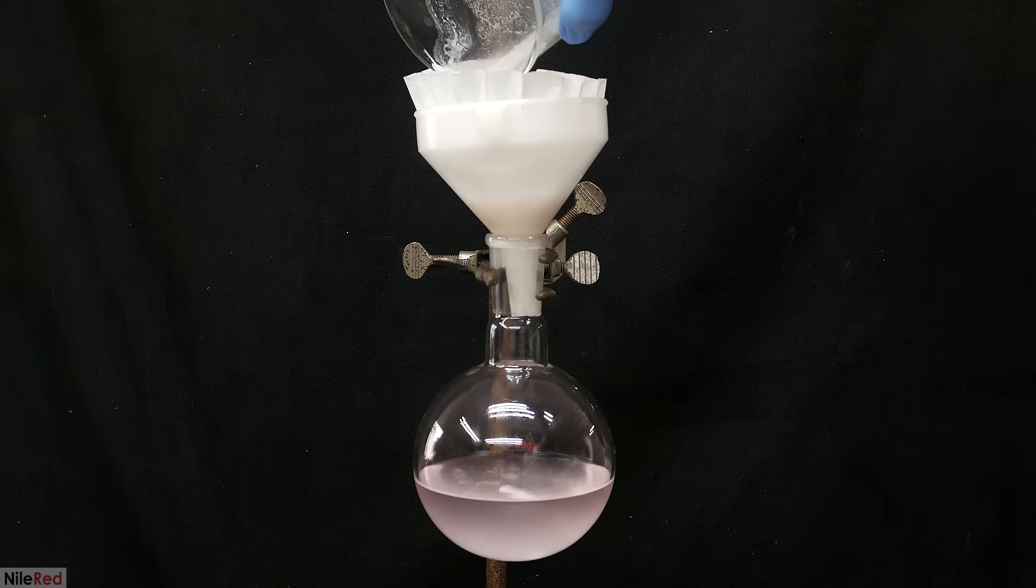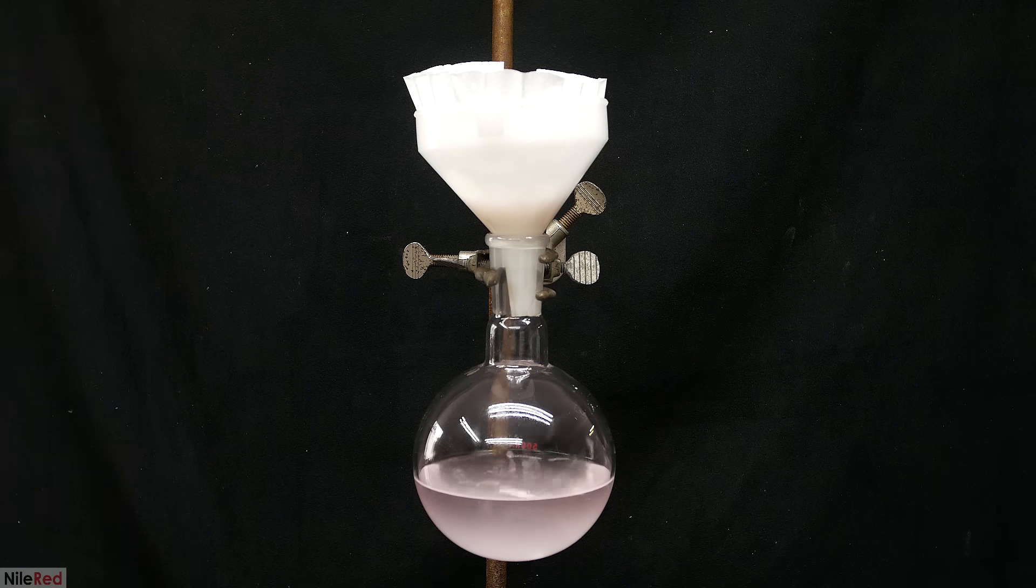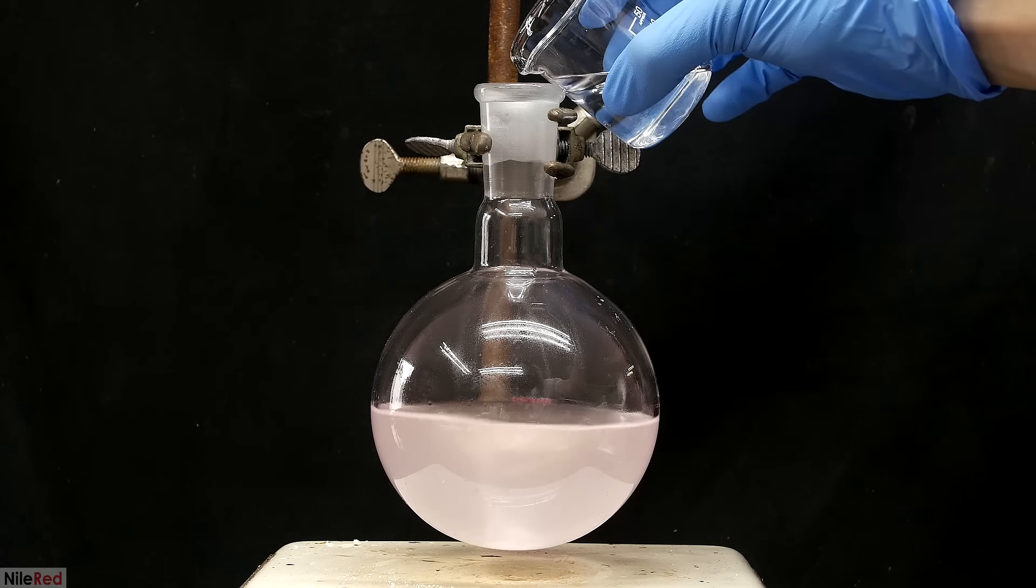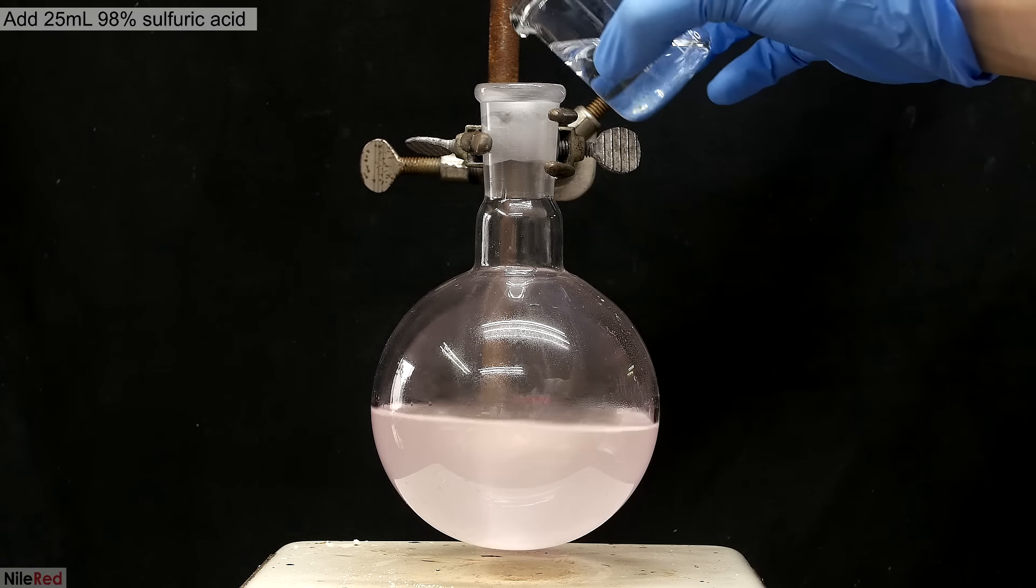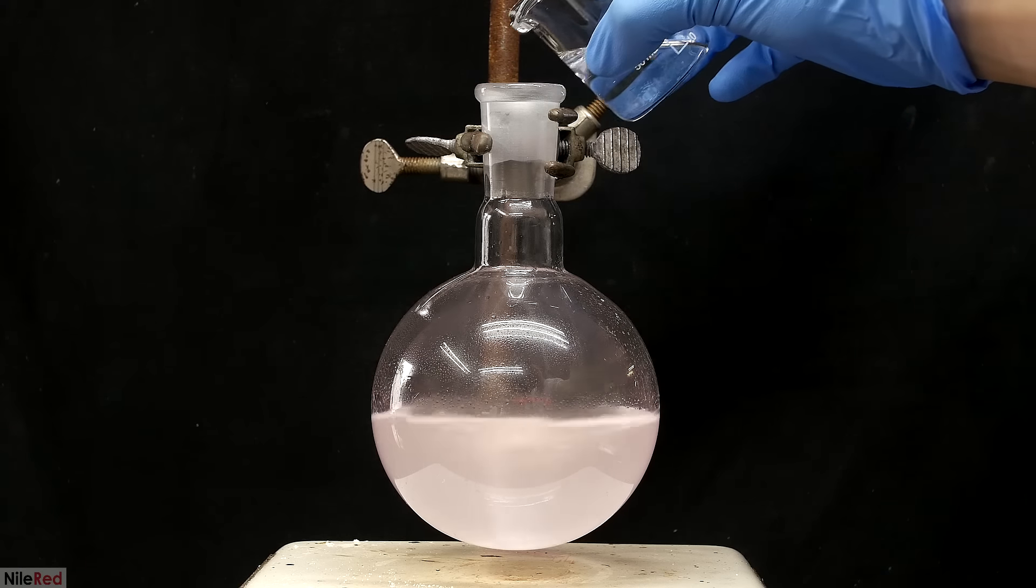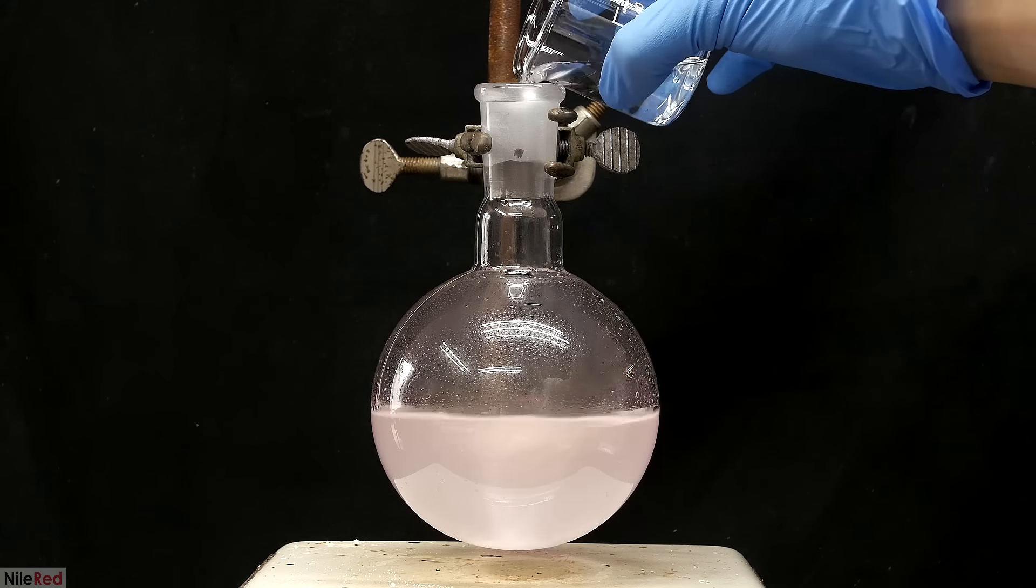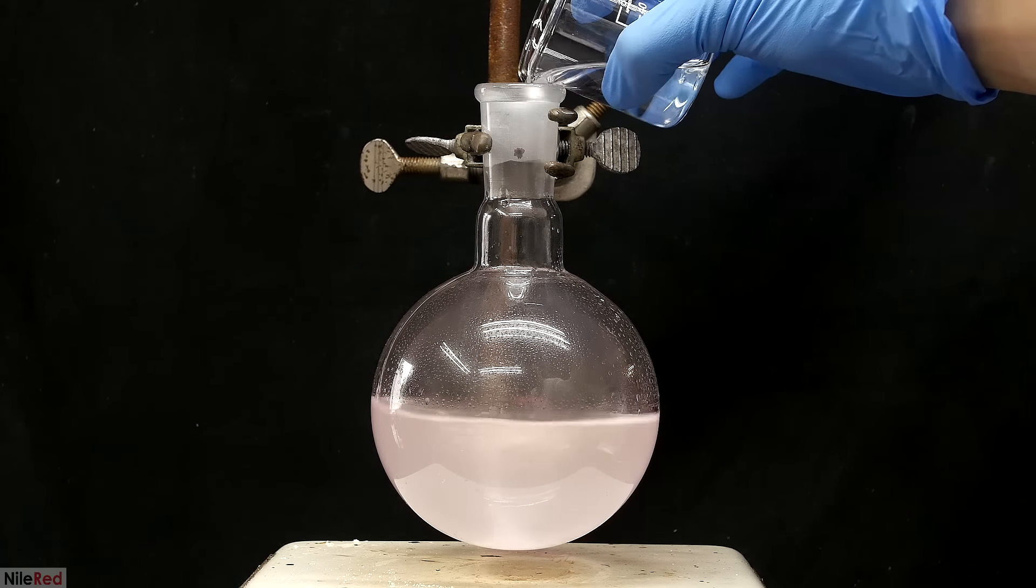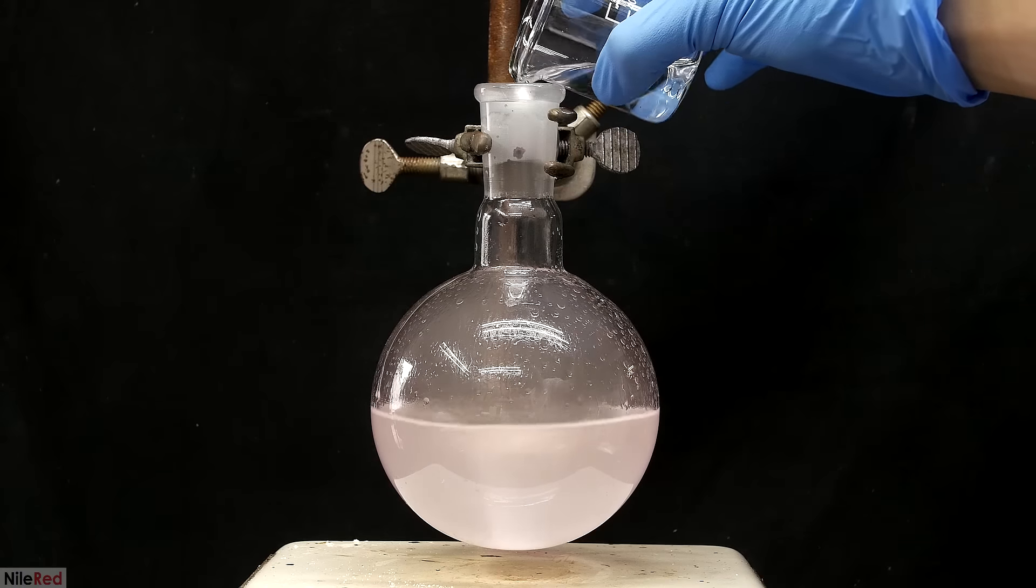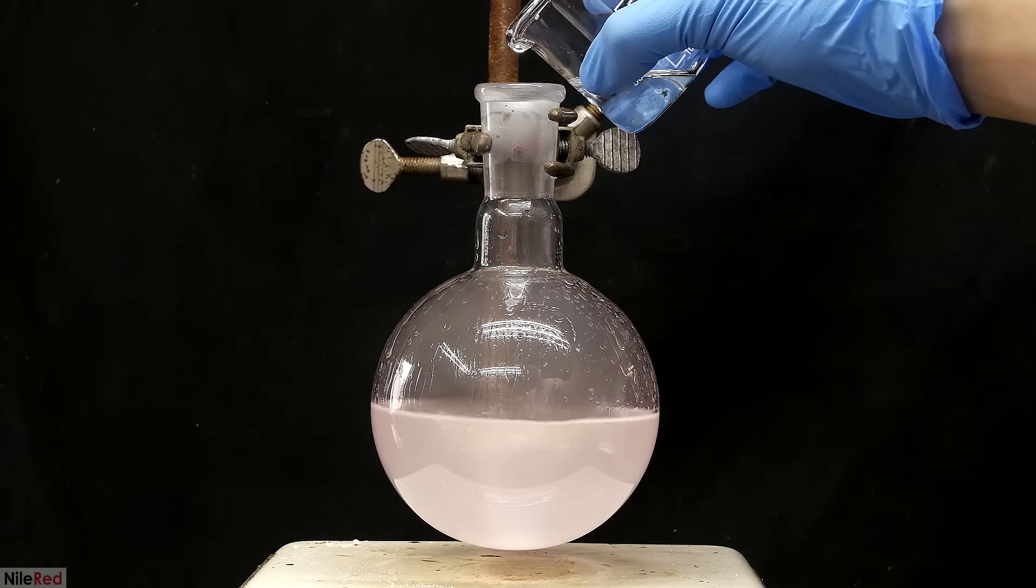After everything passes through, the beaker and the filter are both washed with a little bit of methanol. Then the filter is taken away, and I turn on some really strong stirring. I start to add the concentrated sulfuric acid, and it's very important to do this slowly, and carefully. Adding it generates a lot of heat, and it actually causes some of the methanol to boil. I'm stirring things here magnetically, but it's definitely possible to do it manually, you just have to add it a lot slower, and be a lot more careful.